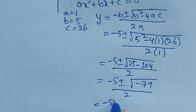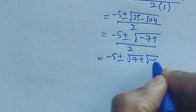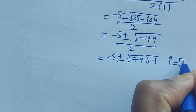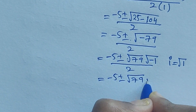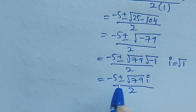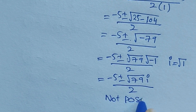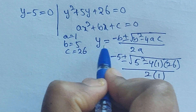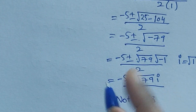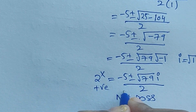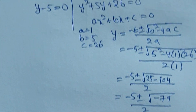So we get minus 5 plus or minus square root of minus 79, divided by 2. The square root of minus 1 is the imaginary number i, so this gives a complex value. Since y equals 2 to the power of x must be positive, this negative discriminant solution is not possible.